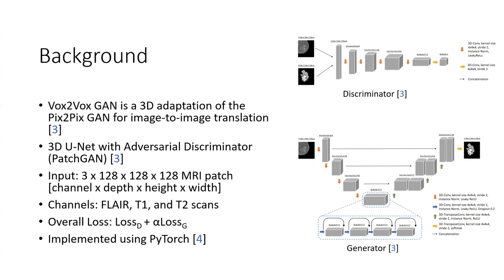To give some background on the Vox-to-Vox architecture: Vox-to-Vox is a 3D adaptation of the PIX-to-PIX GAN, which is used for image-to-image translation — in this case, voxel-to-voxel translation. The network consists of a 3D U-Net paired with an adversarial discriminator that uses the PatchGAN architecture. The network input is a 128x128x128 MRI patch with three channels, corresponding to different types of MRI scans. To calculate overall loss, the discriminative loss and generative loss are summed together, with the generative loss multiplied by constant alpha. This network was implemented using the PyTorch library.